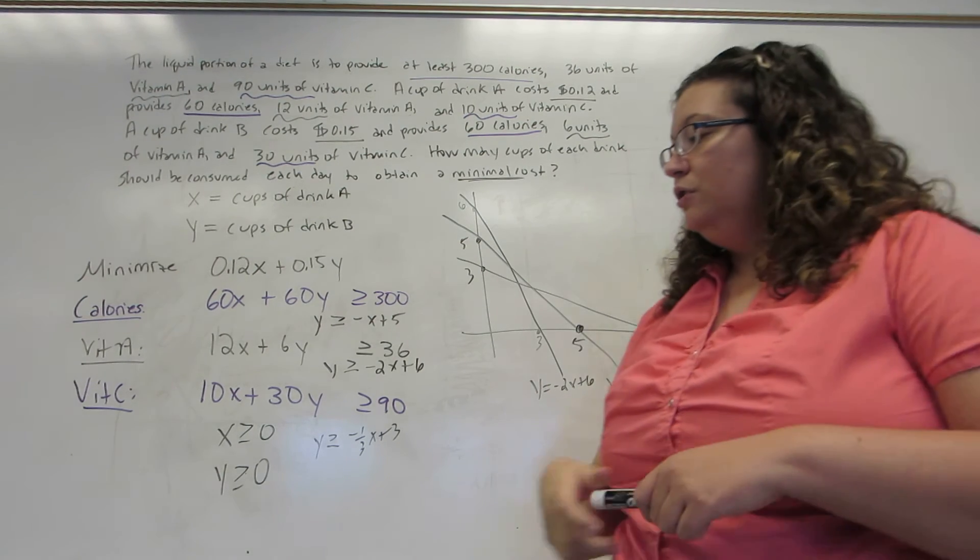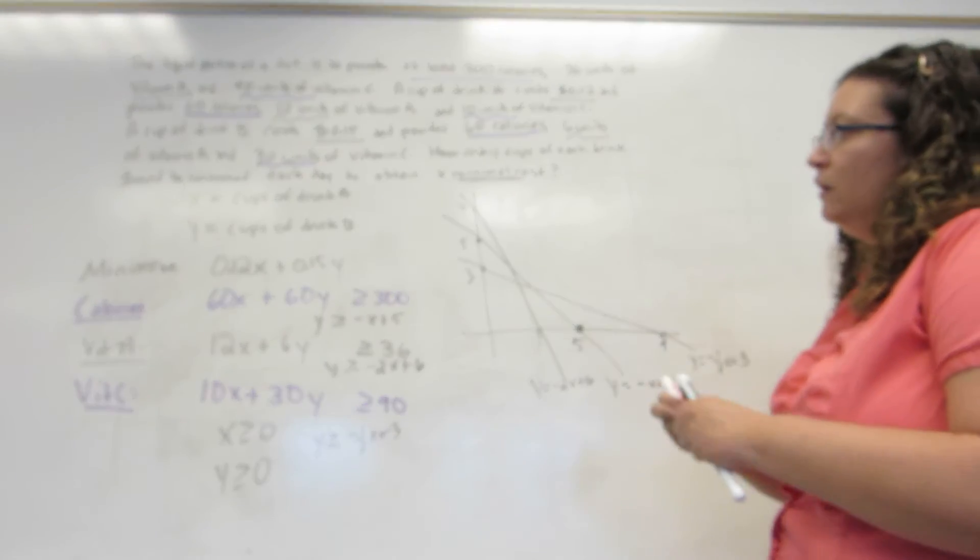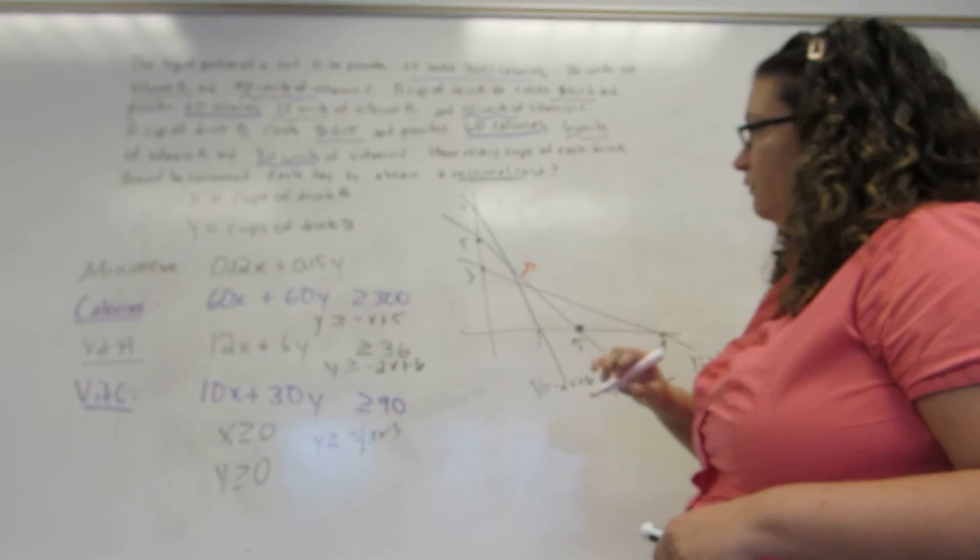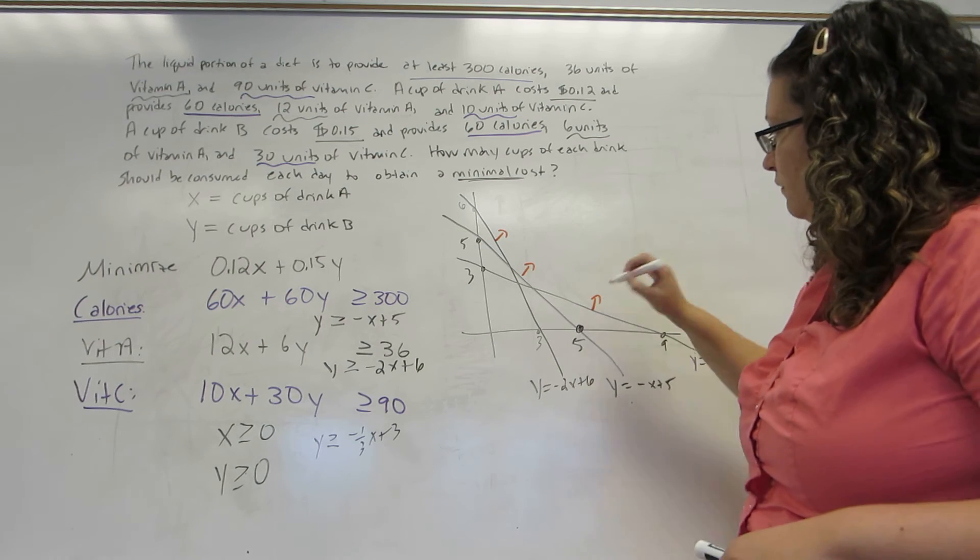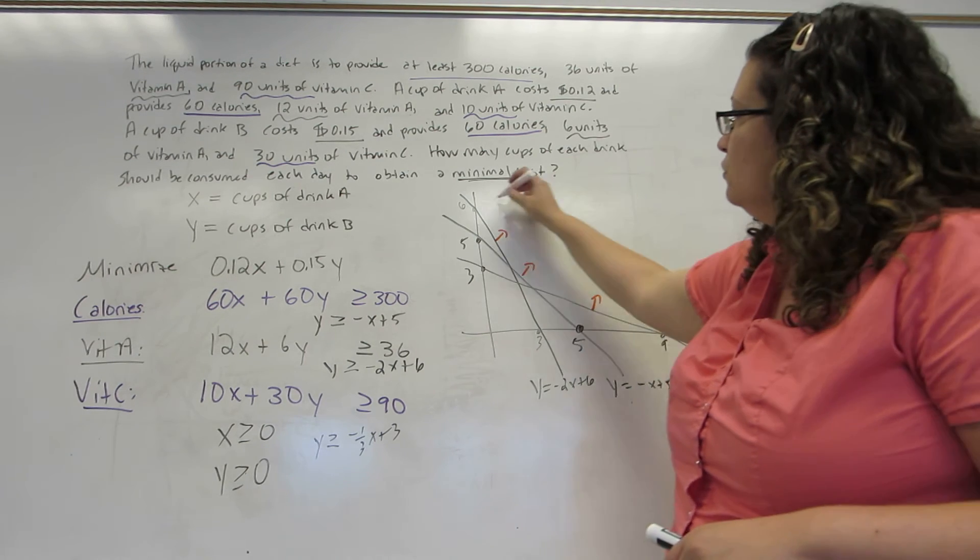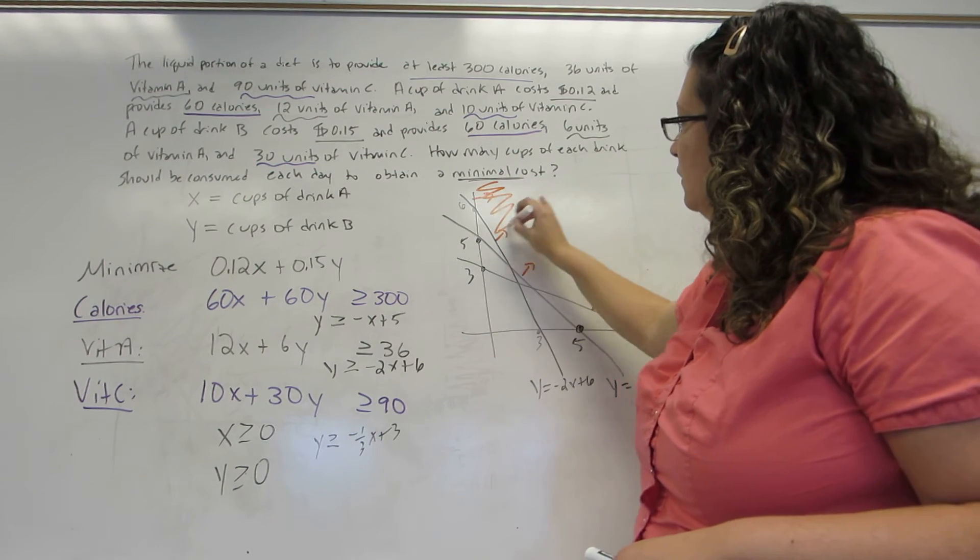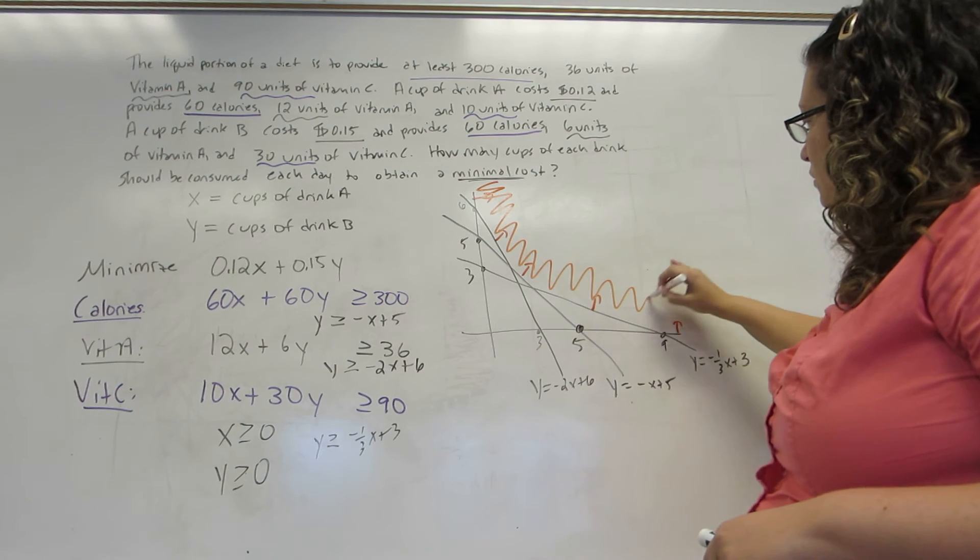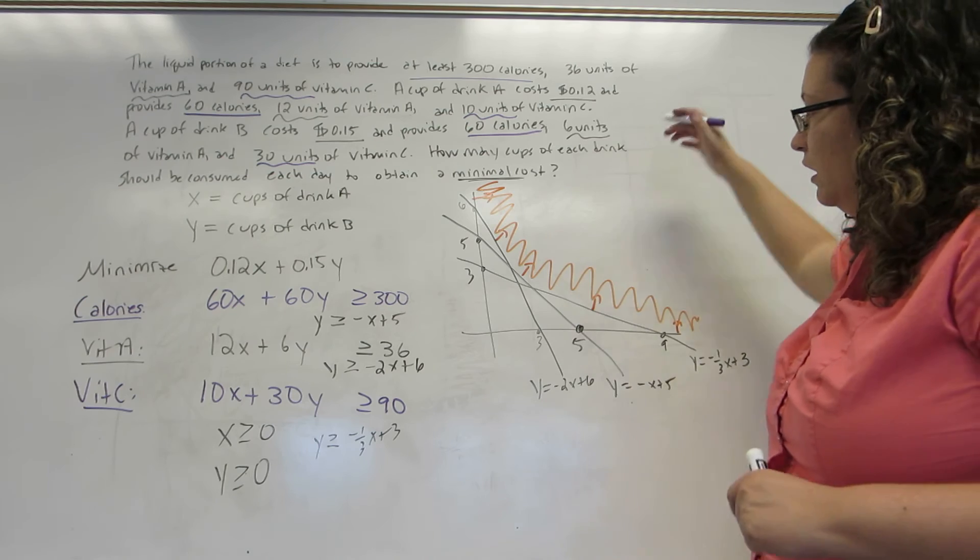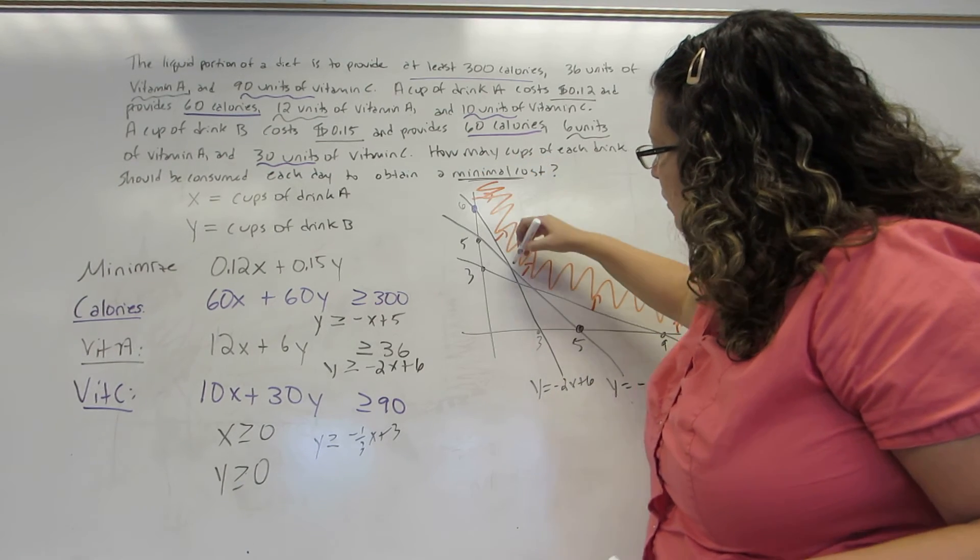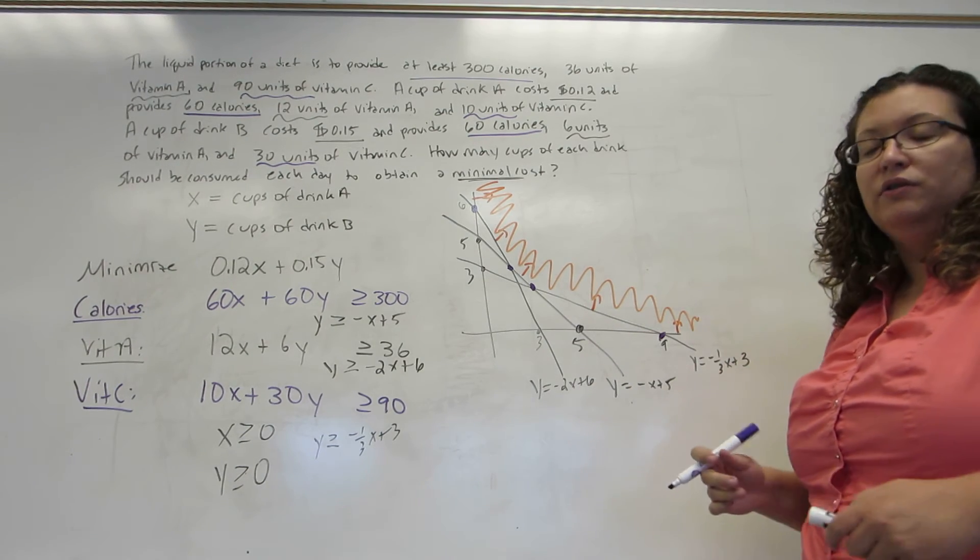Now we're going to try and find the region that this system of inequalities defines. I am above minus X plus 5, above minus 2X plus 6, above minus one-third X plus 3, to the right of the Y-axis and above the X-axis. It is an unbounded region that continues indefinitely up towards the right, but I do have one, two, three, four nice defined intercept points.